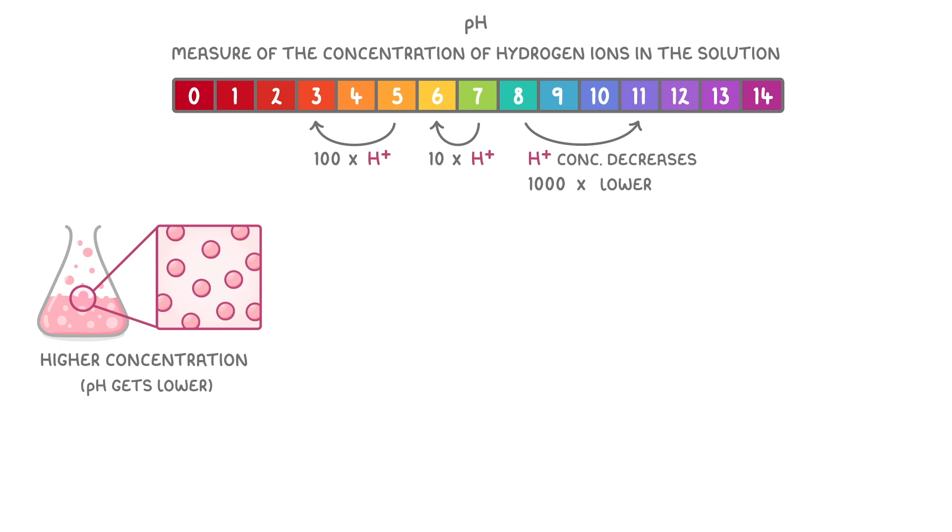So putting all of this together, to get a very acidic solution that has a low pH, we'd need a high concentration of hydrogen ions.